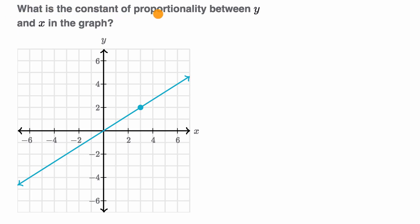We're asked, what is the constant of proportionality between y and x in the graph? And just as a reminder, when we're talking about constant of proportionality, it sounds like a very fancy thing, but it's not too bad.